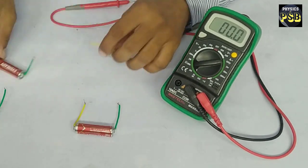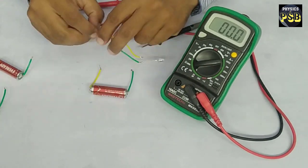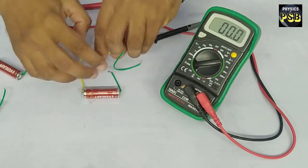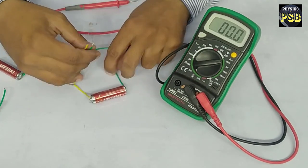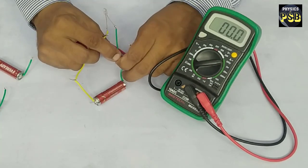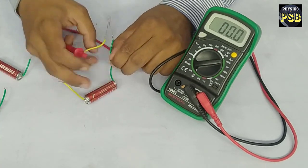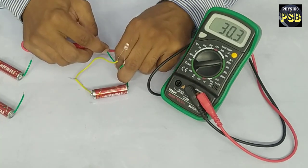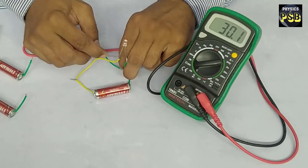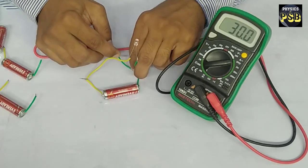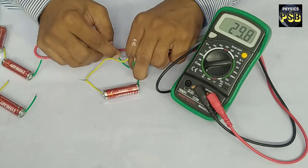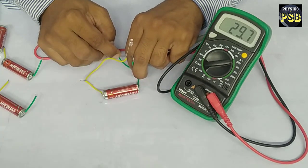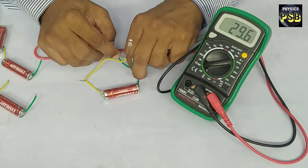Now I will check the current supplied by the last cell. It also provides current more or less similar to other cells. Here the current supplied by this one is 29.6 microampere.